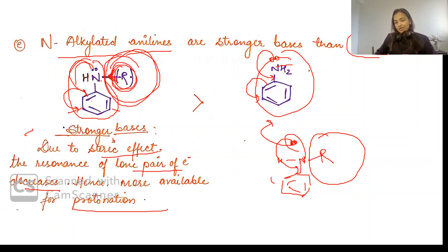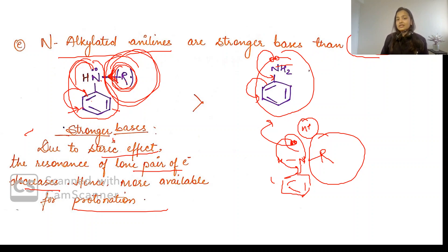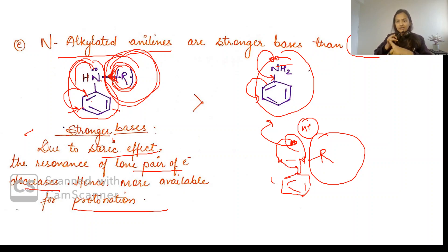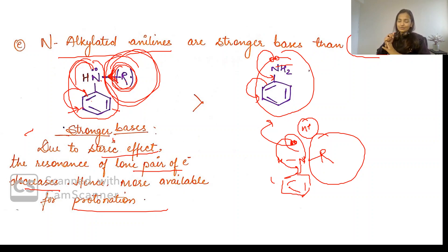This means electrons are more available over this nitrogen, so it will be more basic and more available for proton acceptance because it is less in resonance. Always remember: N-alkylated anilines are always stronger bases than normal aniline. So with this, the topic is over. I hope you understood this video. If you have knowledge of resonance and inductive effect, you can understand acidic and basic strength. Thank you so much for joining — see you in the next video. Please subscribe, hit like, and press the bell icon for notifications. Bye!